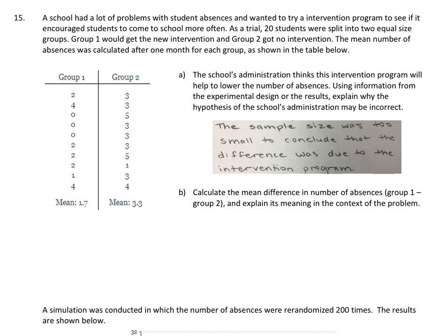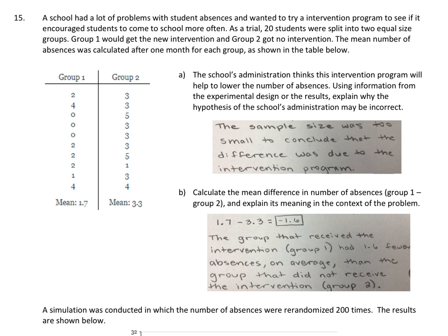Part B: calculate the mean difference (group one minus group two). Group one's average minus group two's average equals negative 1.6 absences. In context, this means group one (the intervention group) had 1.6 fewer absences on average than group two (the non-intervention group). Always say 'on average' since these are mean values, not totals.